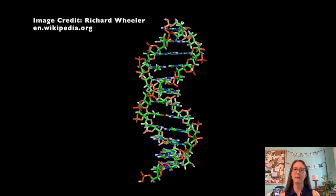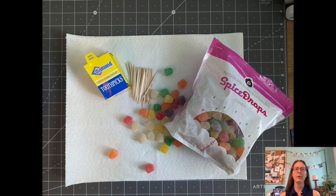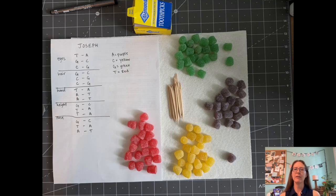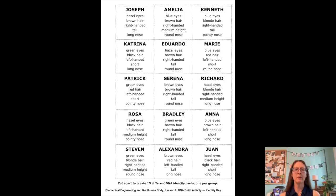From there, it's up to you how much you want to tell your students. The only materials you'll need are toothpicks, gumdrops, and plates to put their DNA creations on so your classroom doesn't get all sugary. You'll want to print out the color key so your students know which color gumdrops represent which nucleotide and which combination of nucleotides represent which traits. There are three different color keys so that you don't run out of gumdrops. You'll also want to print out the DNA identity cards so they know what traits they're trying to create with their models.